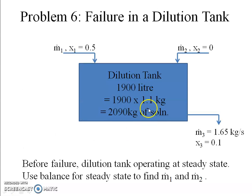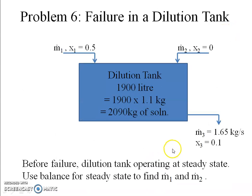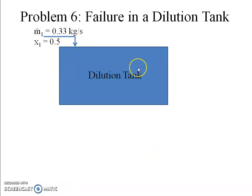There are two components — NaOH and water — so two independent balances. Starting with the NaOH balance (one unknown, Ṁ₁): 0.5·Ṁ₁ = 0.1·Ṁ₃, where Ṁ₃ = 1.65 kg/s, giving Ṁ₁ = 0.33 kg/s. Taking an overall balance then gives the inlet water flow rate as Ṁ₂ = 1.32 kg/s. So at t = 0, Ṁ₁ = 0.33 kg/s, Ṁ₂ = 1.32 kg/s, and Ṁ₃ = 1.65 kg/s.